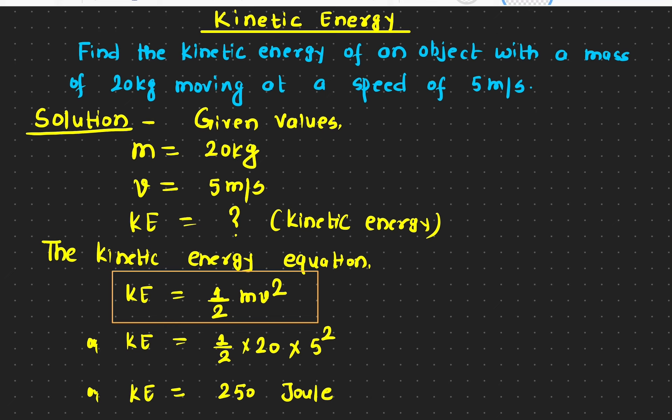Now in this video we're going to find out the kinetic energy of the object here. So we have a 20 kilogram moving object which moves at a speed of 5 meters per second.